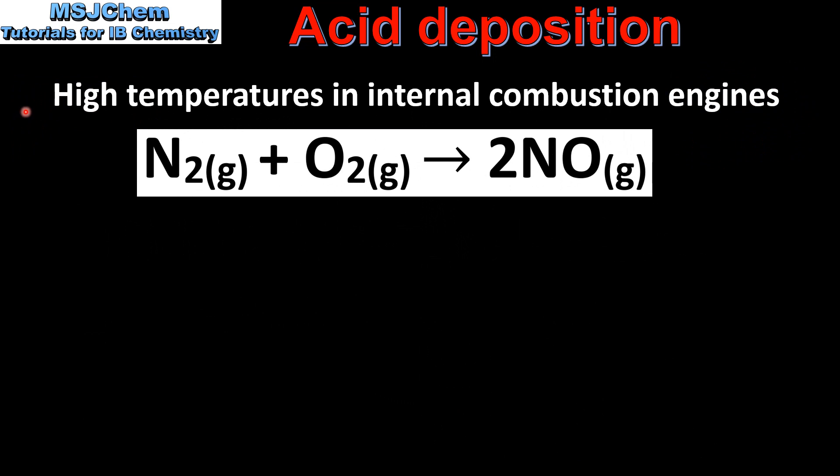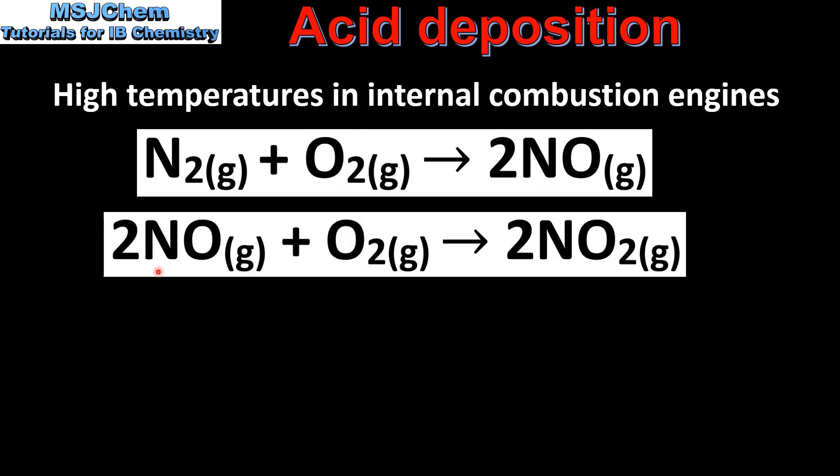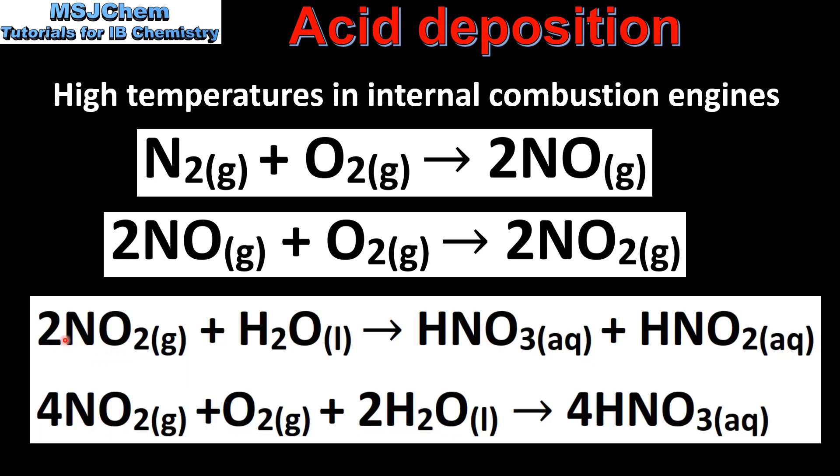Next we look at the formation of nitrous and nitric acid. This reaction, which occurs at high temperatures in internal combustion engines, involves nitrogen reacting with oxygen to form nitrogen monoxide. In the next step, the nitrogen monoxide reacts with oxygen to form nitrogen dioxide. The nitrogen dioxide can then react with water to form nitric acid and nitrous acid. Alternatively, the nitrogen dioxide can react with oxygen and water to form nitric acid.